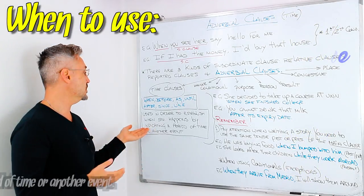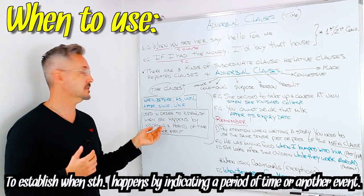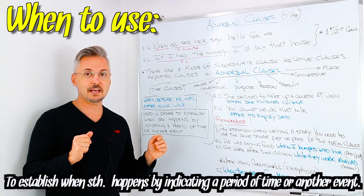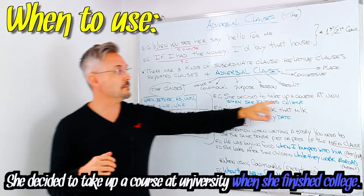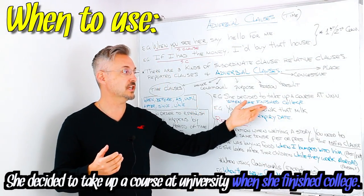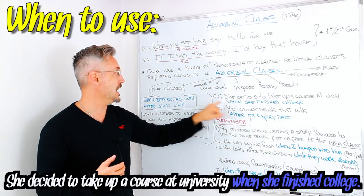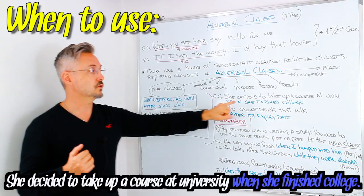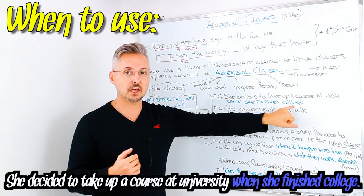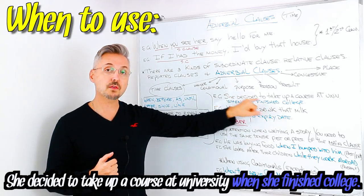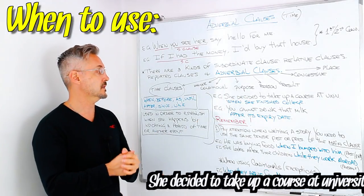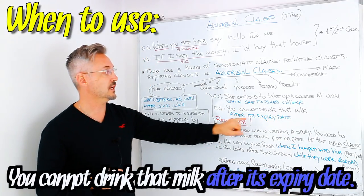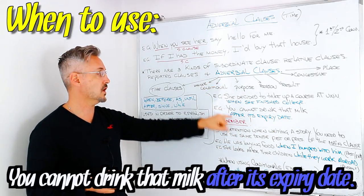When do we use time clauses? They're used to establish when something happens by indicating a period of time or another event. For example: 'She decided to take up a course at university when she finished college' — the time clause is 'when she finished college.' Second example: 'You cannot drink that milk after its expiry date' — 'after its expiry date' is the adverbial time clause.